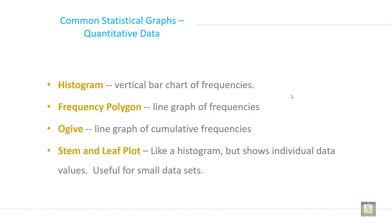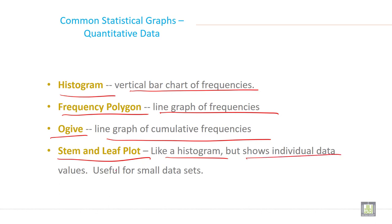Common statistical graphs are histogram. What is histogram? It is a vertical bar chart of frequency. Then frequency polygon, it is a line graph of frequency. Ogive, it is a line graph of cumulative frequency and stem and leaf plot like histogram but shows individual data value useful for small data sets.